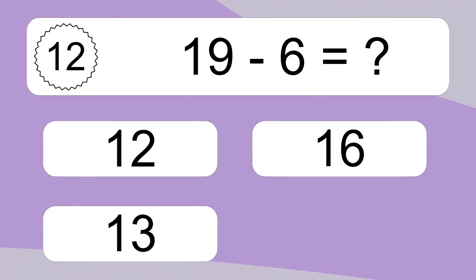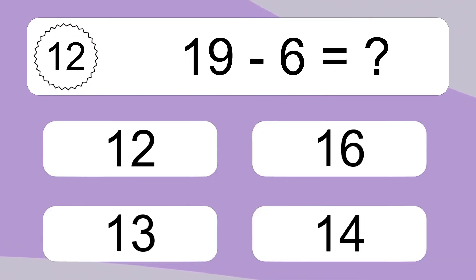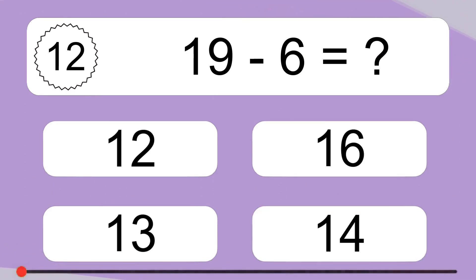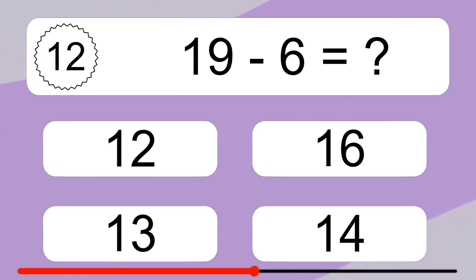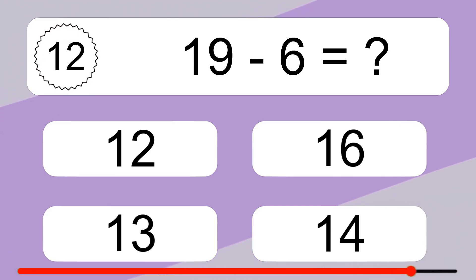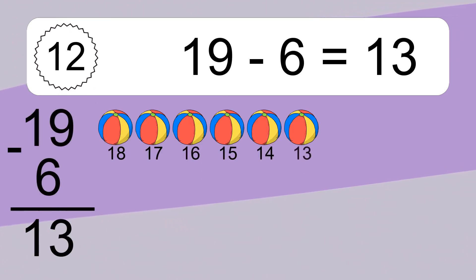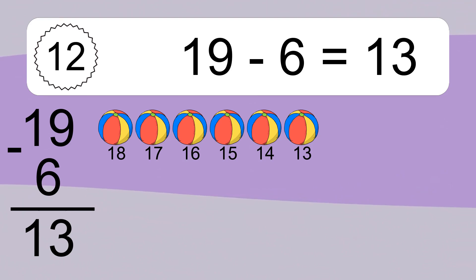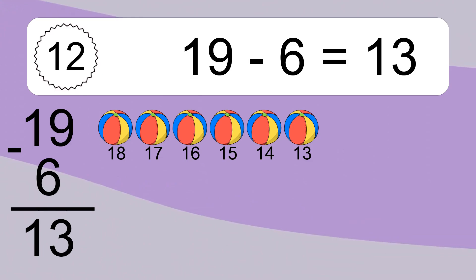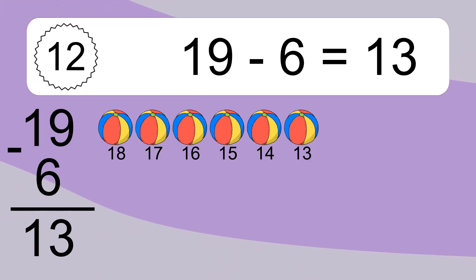Nineteen minus six equals what? Nineteen minus six equals thirteen. Let's count it: eighteen, seventeen, sixteen, fifteen, fourteen, thirteen.